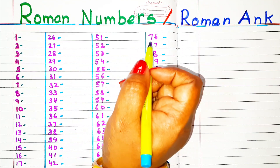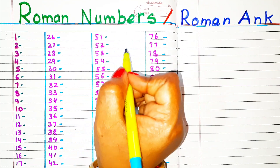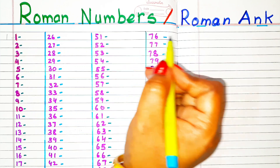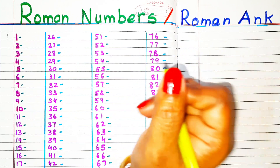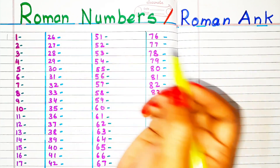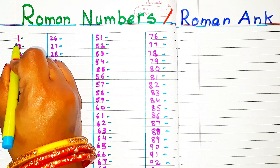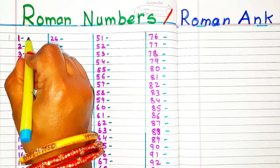Welcome to channel Simple Easy Learning. Today we are going to learn Roman Numbers, or Roman Ankh. We will write Roman Numbers from 1 to 100. So let's begin.